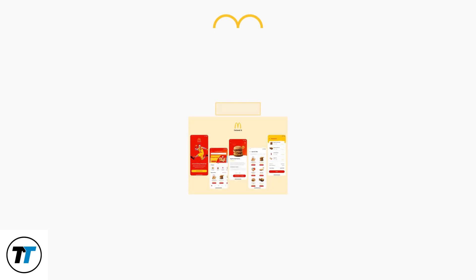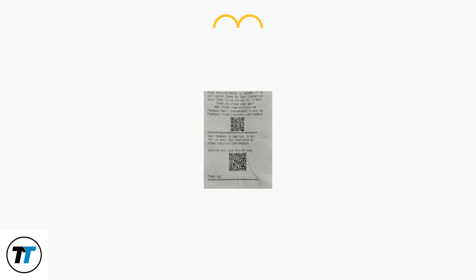The McDonald's app order history is more than just a list. With recent updates, the Orders tab has been revamped for easier use. You can now filter orders by date or location. Receipts include QR codes for scanning at stores to earn loyalty points.